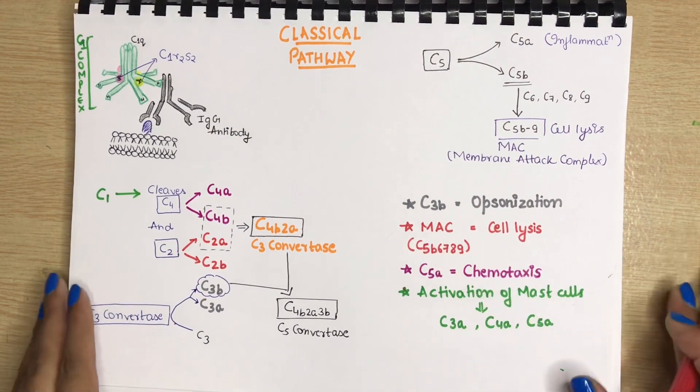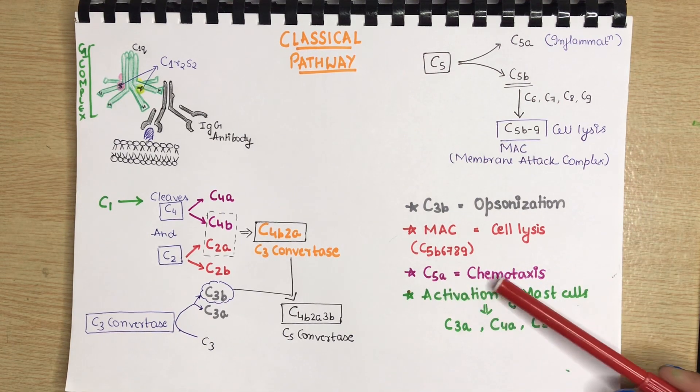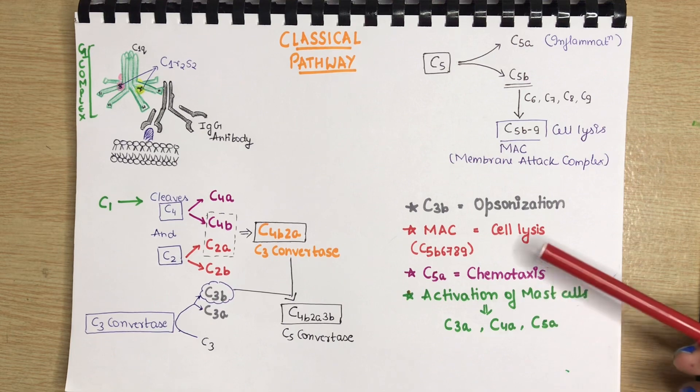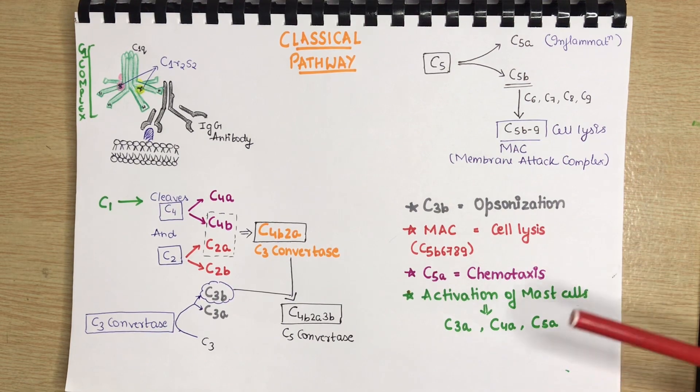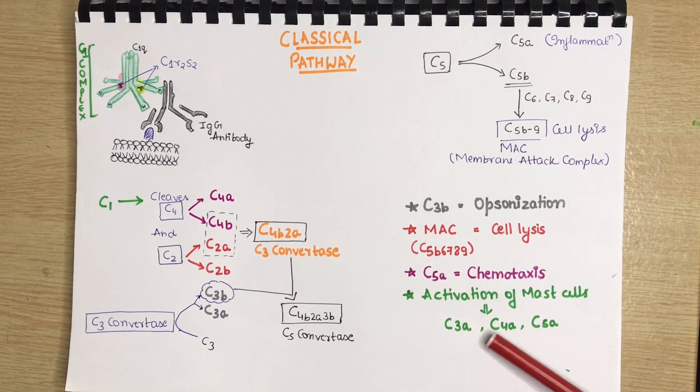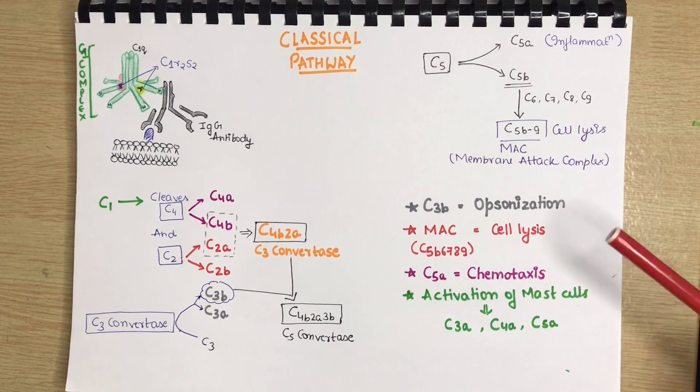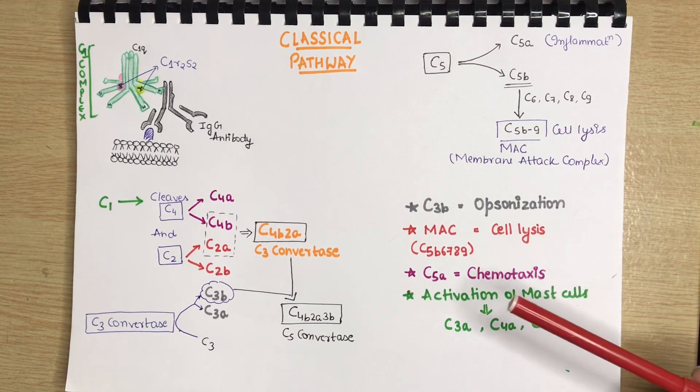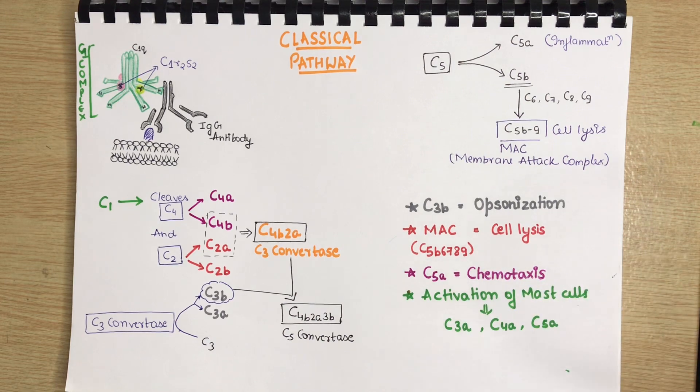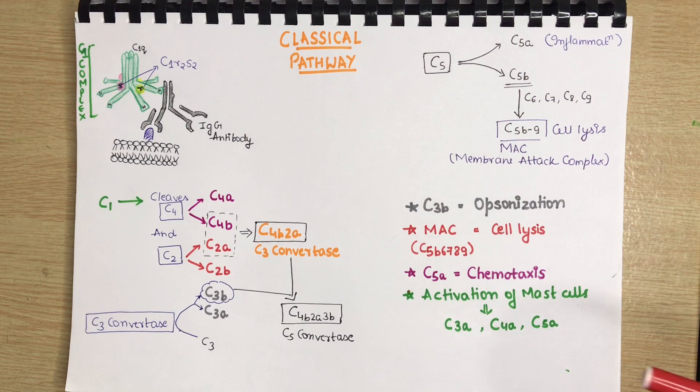What MAC does, it does the cell lysis. And what C5A does, it does the chemotaxis. Basically, it attracts the neutrophils and macrophages towards the area where antigen is present. Then we have C3A, C4A and C5A which is involved in activation of mast cells and basophils. What this causes, it causes large amount of mediators of inflammation release.